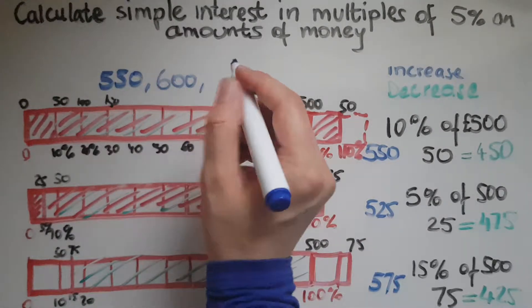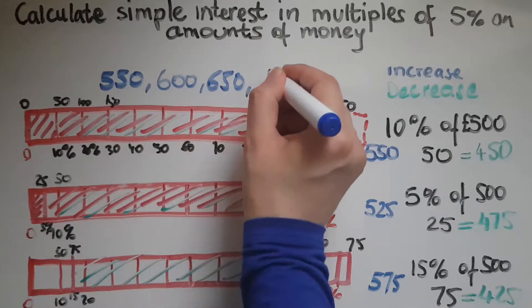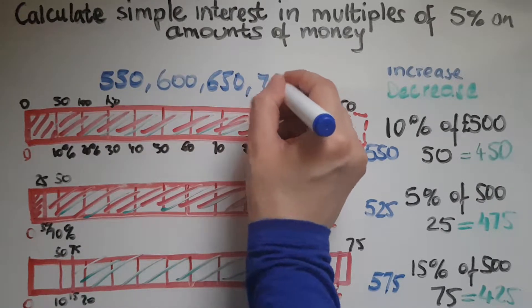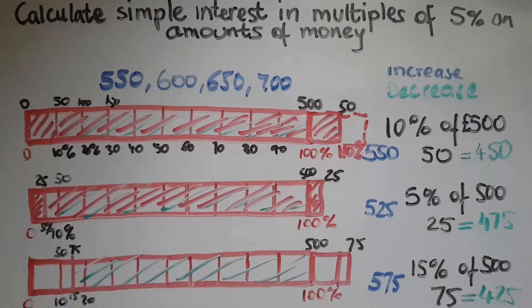At the end of year three, you'd have £650. At the end of year four, you'd have £700 and so on, adding £50 each year.